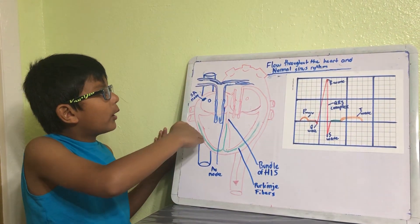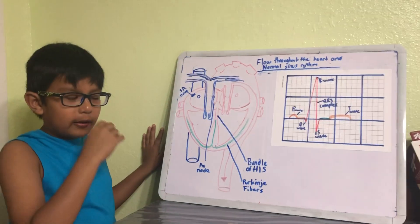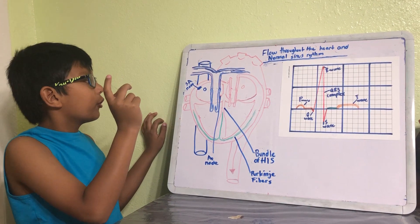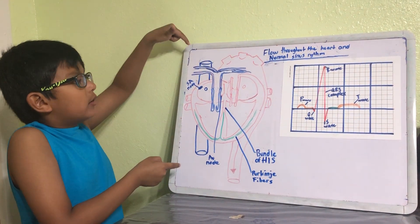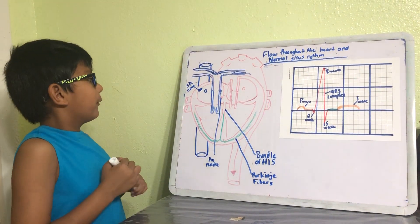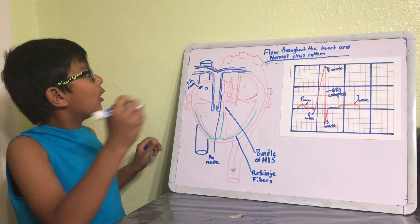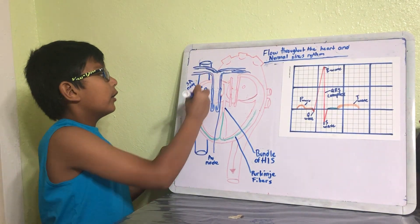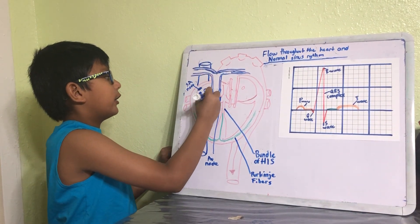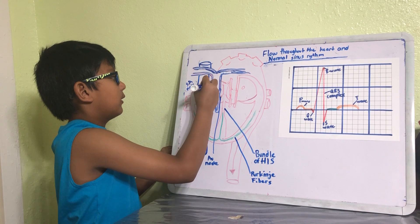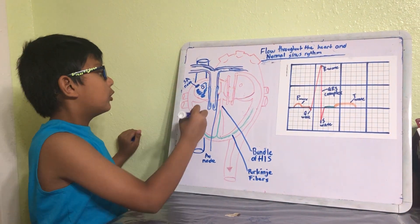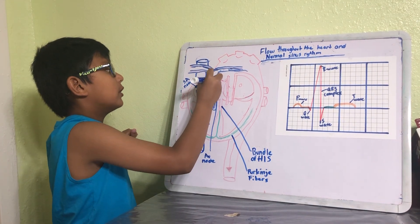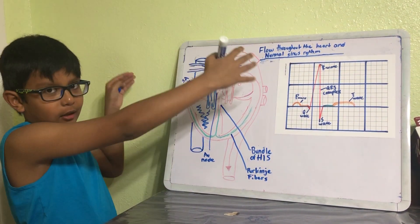So what I'm going to introduce you to is the flow throughout the heart. Basically, we're gonna start our journey at the superior and inferior vena cava. I would come down through here and here and then start filling up this, and then I would go into here and be pushed out into the lungs to get oxygenated.